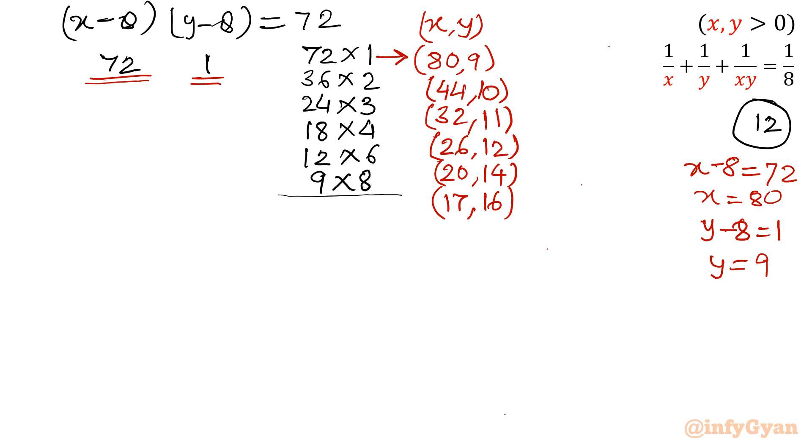So there are 80,9; 44,10; 32,11; 26,12; 20,14; 17,16. Now once you will swap its position, then you will get, I am writing by changing its position: 9,80 because ultimately they are in symmetry also. If you will swap the position of variables itself, x and y, if you will swap, equation will be unchanged.